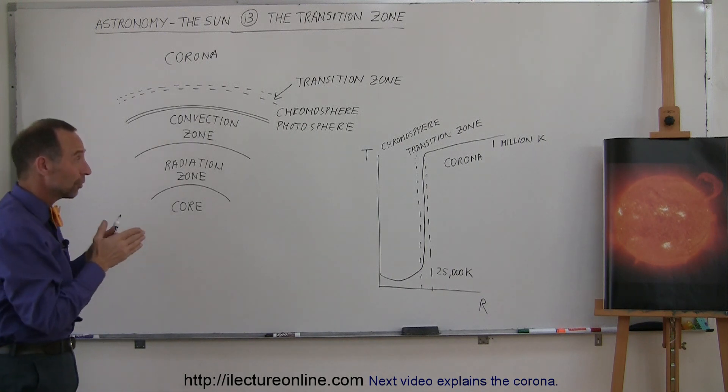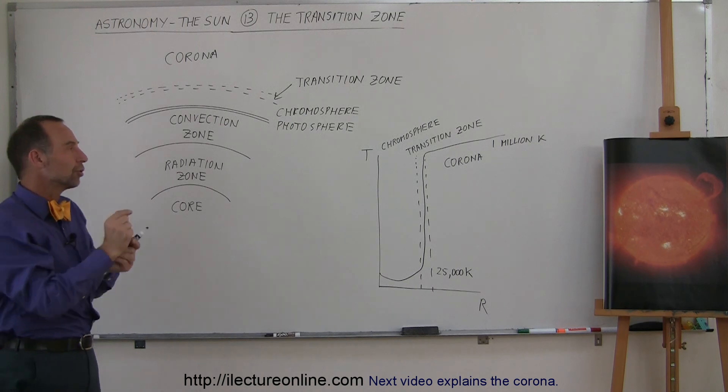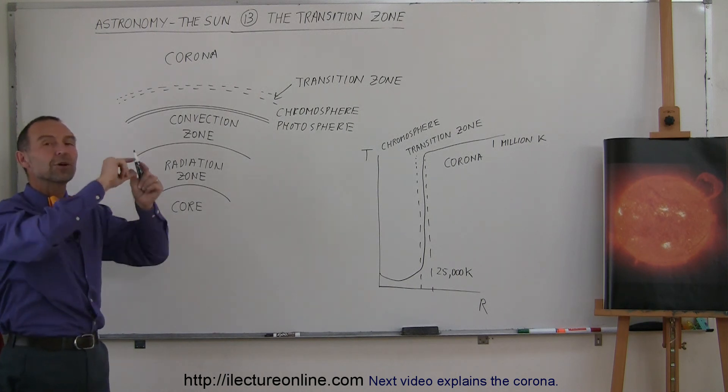What sets the transition zone apart from everything else is that there's a huge temperature variation over a very small region around the sun.